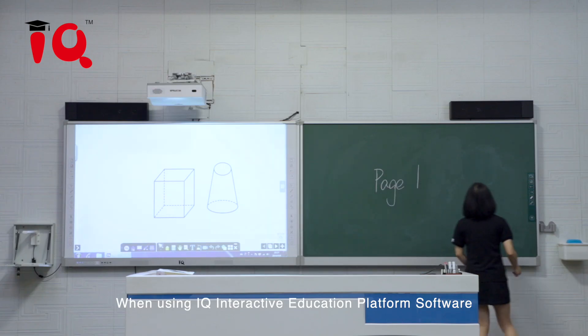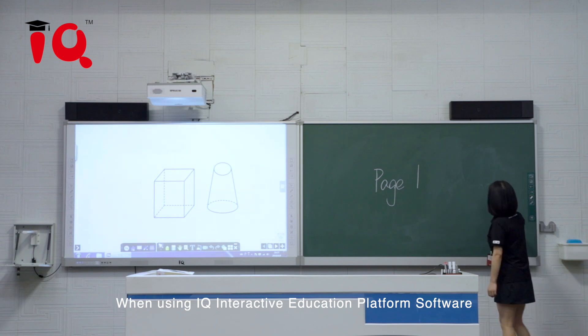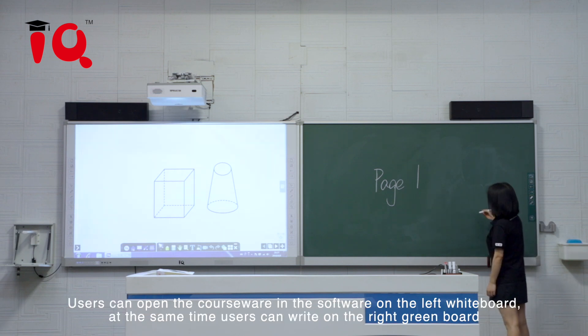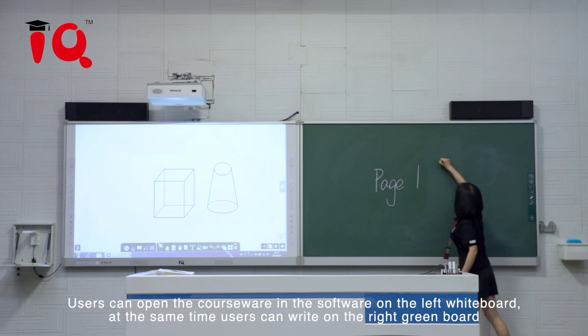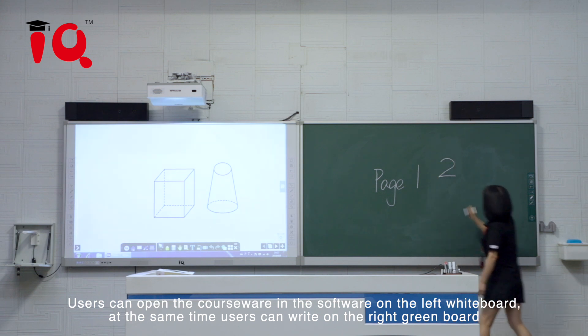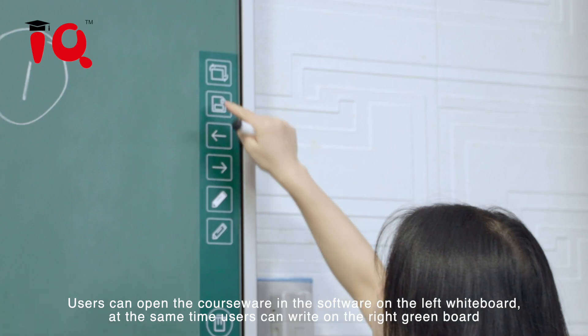When using IQ Interactive Education Platform software, users can open the courseware and the software on the left whiteboard. At the same time, users can write on the right greenboard.